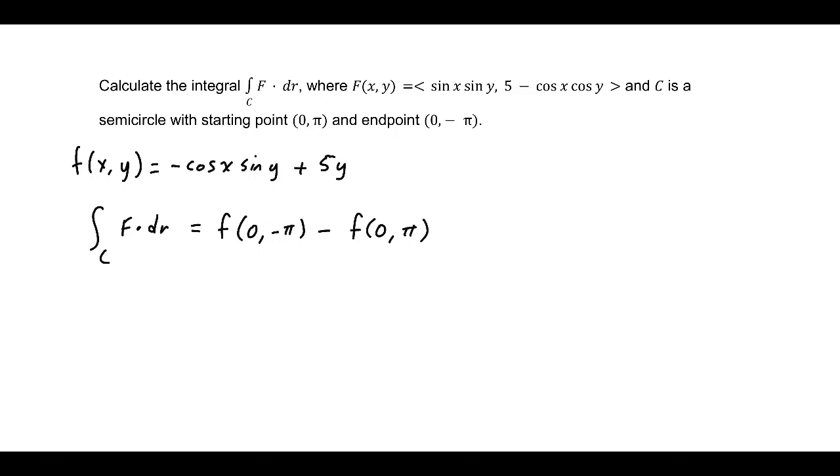The first evaluation will be -5π, the second evaluation will be 5π, so subtracting those two gives -5π - 5π = -10π.